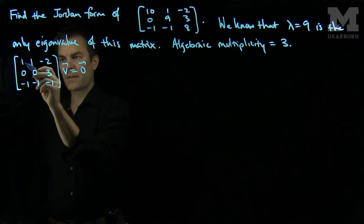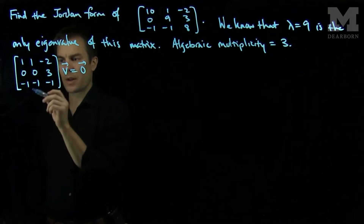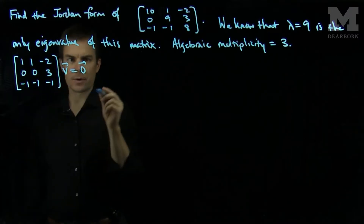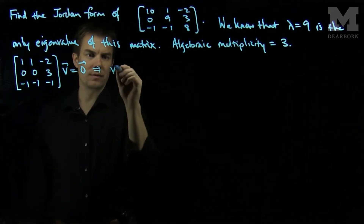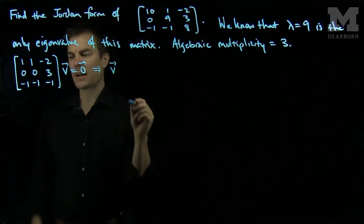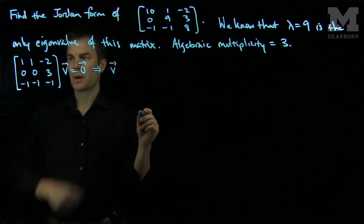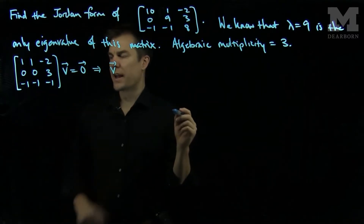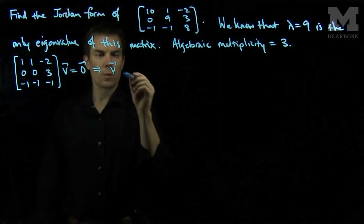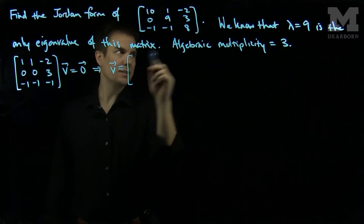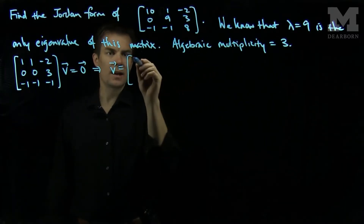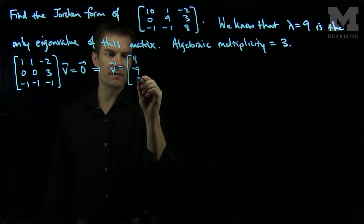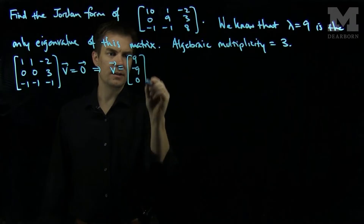Since I have a 1, 1 and a negative 1 in the x and the y entry respectively, that tells me that I can choose v to be any multiple of (1, negative 1, 0). For the sake of simplicity, since we have 9, I will choose v = (9, negative 9, 0).